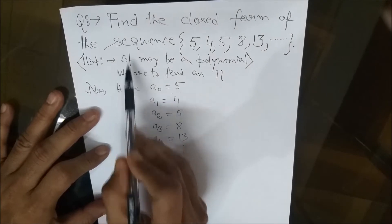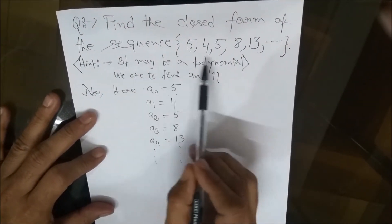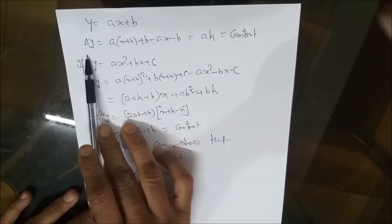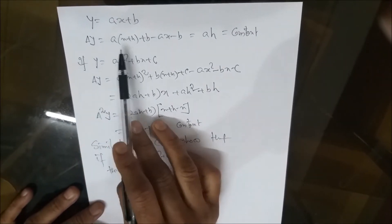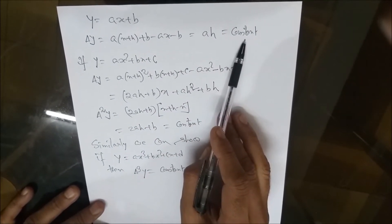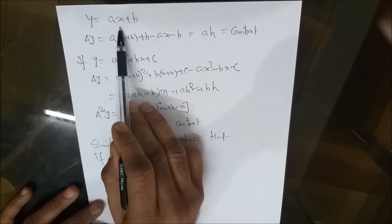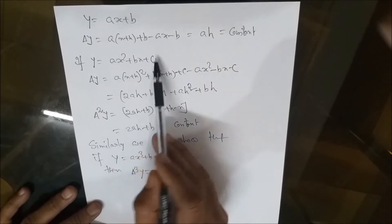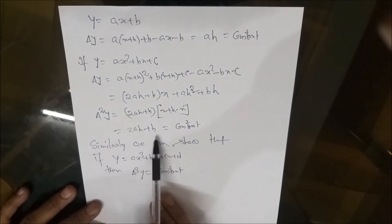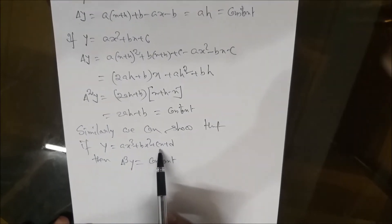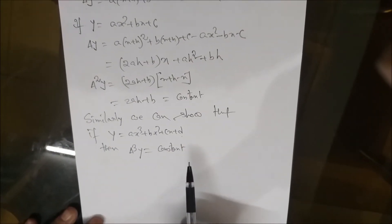It has been given as a hint that this sequence may be a polynomial. If y = ax + b (a first degree polynomial), then the first order forward difference Δy = a·h, which is constant. Similarly, if y = ax² + bx + c, then Δ²y is constant. And if y = ax³ + bx² + cx + d, then Δ³y will be constant.